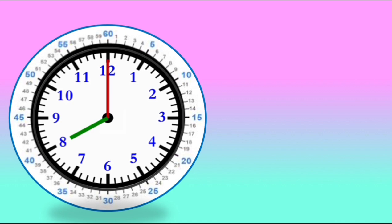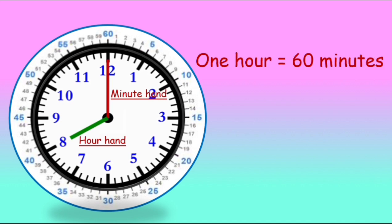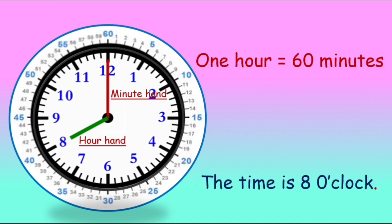Now we have another clock where the hour hand and the minute hand are shown. One hour is equal to 60 minutes and the time on my clock is 8 o'clock.